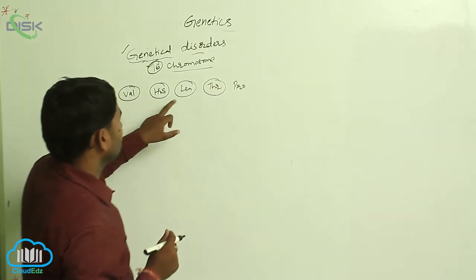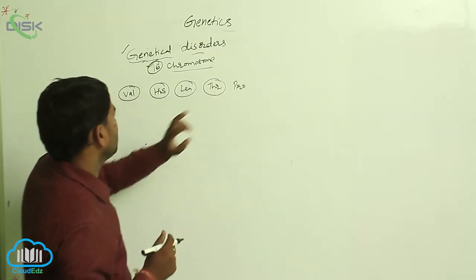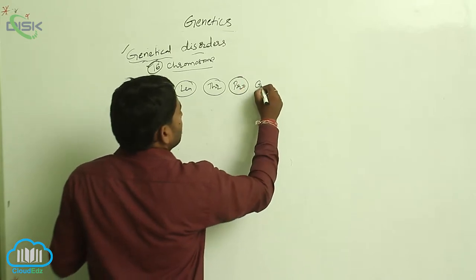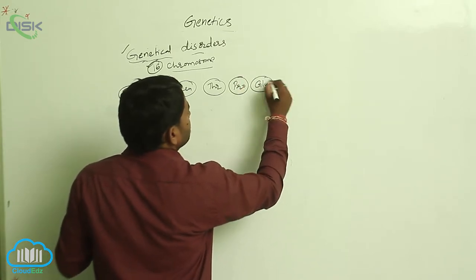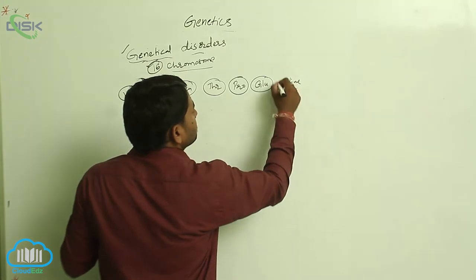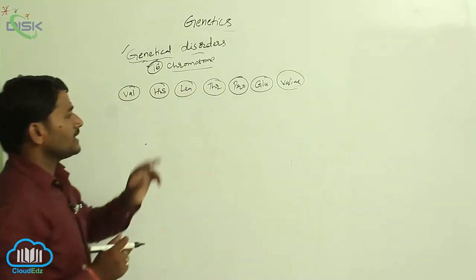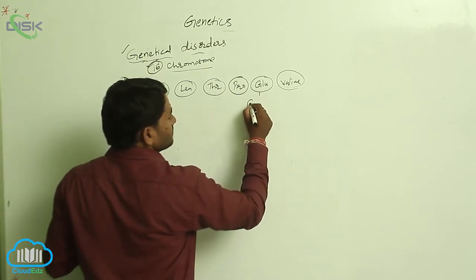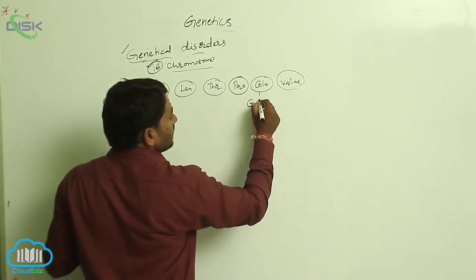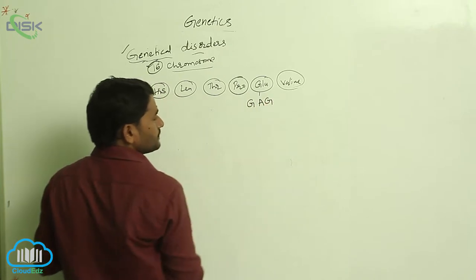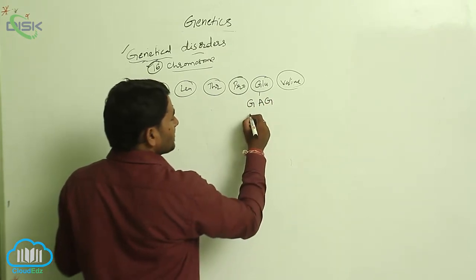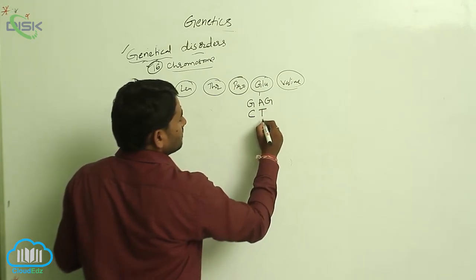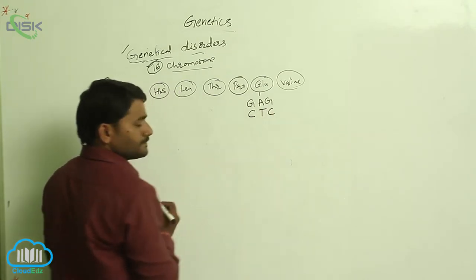So the amino acid sequence continues: valine, histidine, leucine, threonine, proline, glutamic acid, and valine. These are the sequences. In the normal gene, glutamic acid is coded by the codon GAG, and its complementary DNA sequence is CTC.